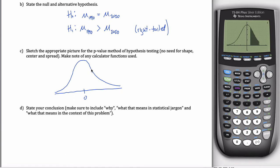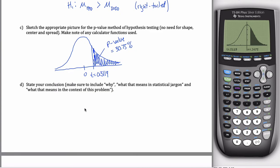See, that's pretty big here. These don't really need to be drawn to scale. T is equal to 0.5119. And my p-value, the area over here to the right, is about 30%. 30.75%. And then state your conclusion.